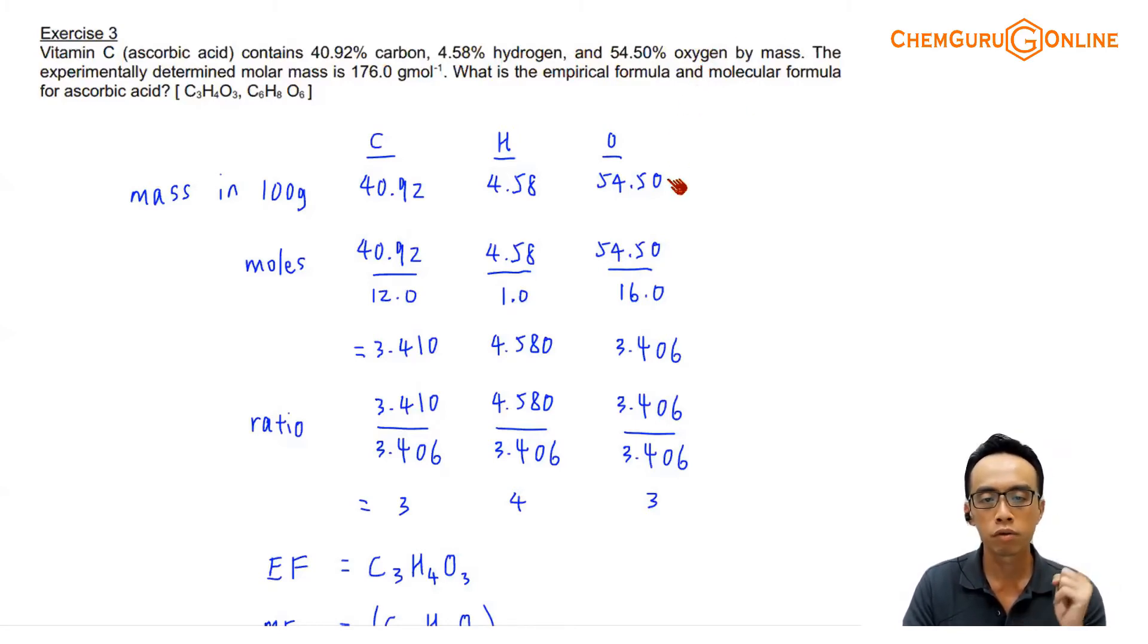First thing we have to settle is the empirical formula. I think what all of us would do is actually largely similar. Percentages we converted to mass in 100g. So in 100g, since I have 40.92% of carbon, the mass of carbon would be 40.92. Follow the percentage, so I'll have 4.58g of hydrogen, 54.50g of oxygen.